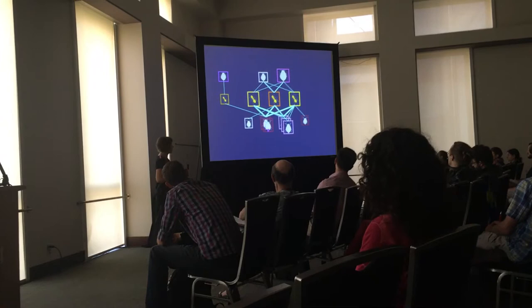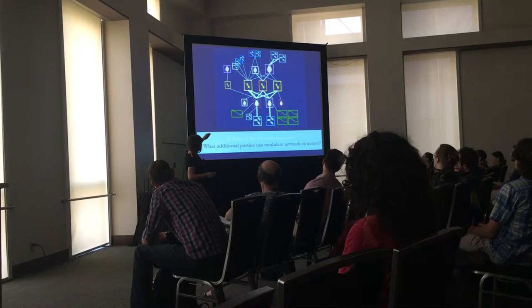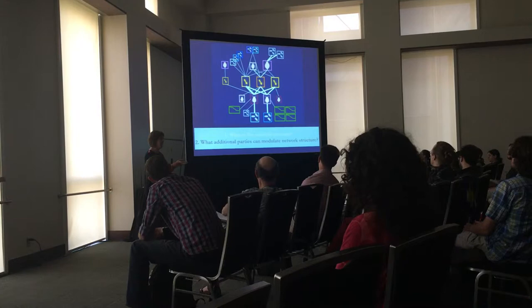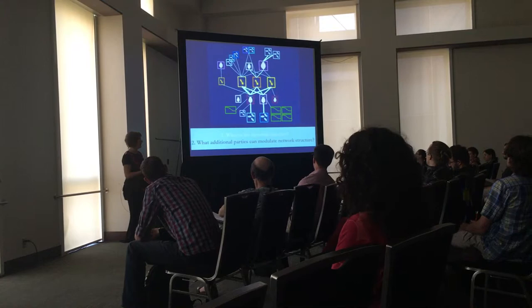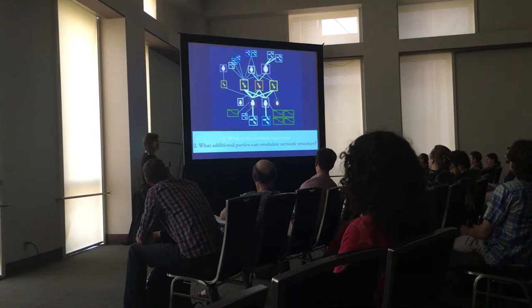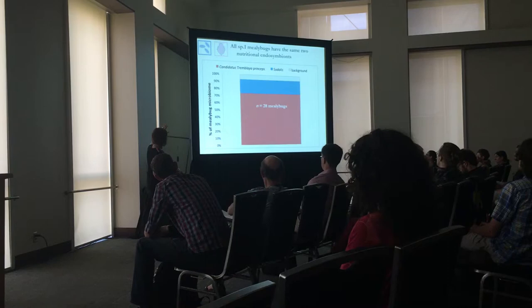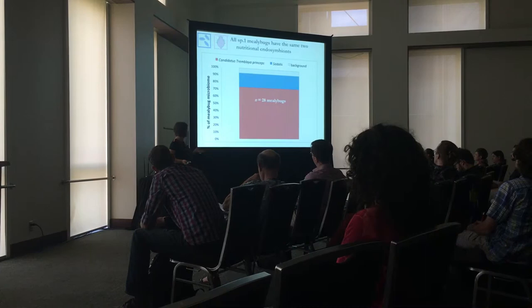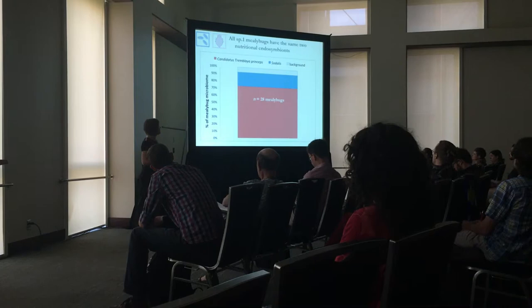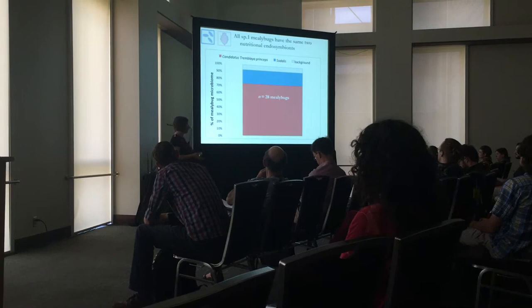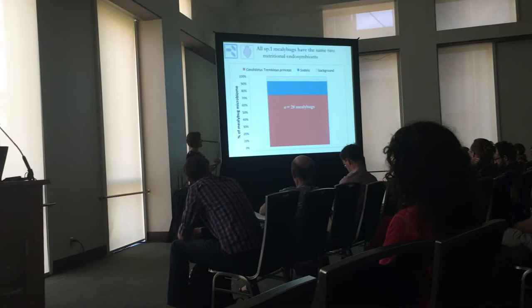This brings us to the next part of the questions: what are the additional partners that may modulate the interactions we observe? This leads to the microbiome part of the project. I did 16S sequencing, and for the mealybug result that sufficed. All the mealybugs — shown here as percentage of microbiome reads — are very consistent in their microbiome. They have two endosymbionts, Candidatus Tremblaya and Sodalis, which are known endosymbionts of mealybugs. They all have them in very similar proportions, and I didn't find these bacteria anywhere else in the system.